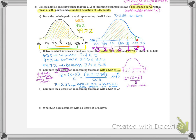So for part D, it says compute the Z-score for an incoming freshman with a GPA of 2.4. So again, we're being asked to find a Z-score, which we know is X minus X-bar all over S. But this time they're telling us that X is equal to 2.4.